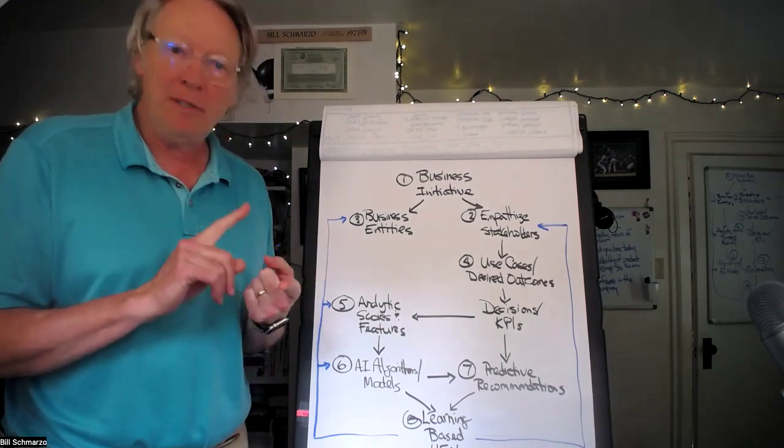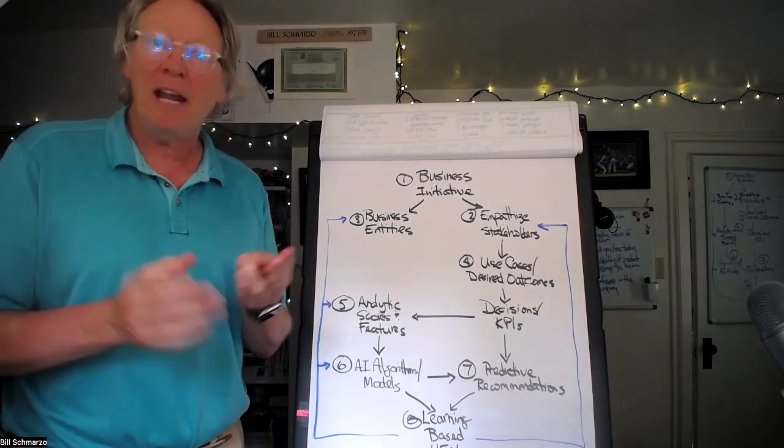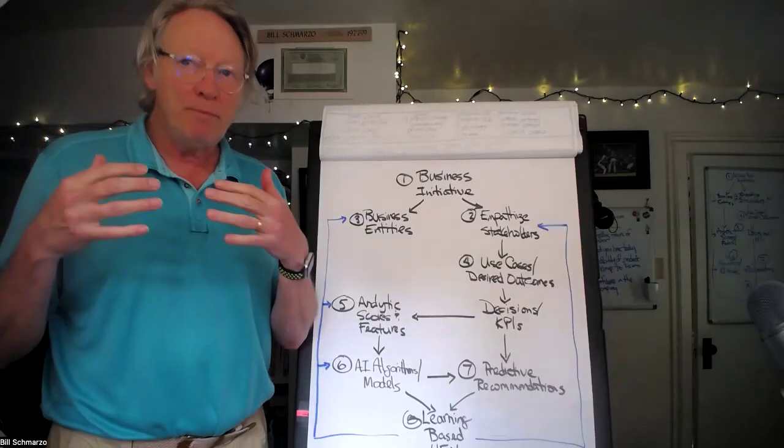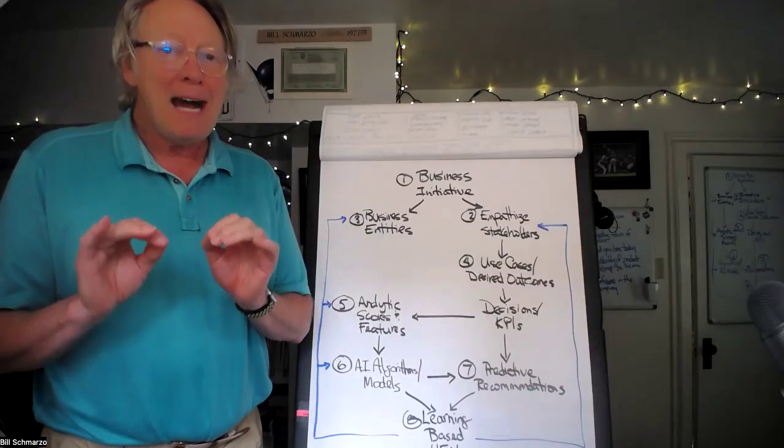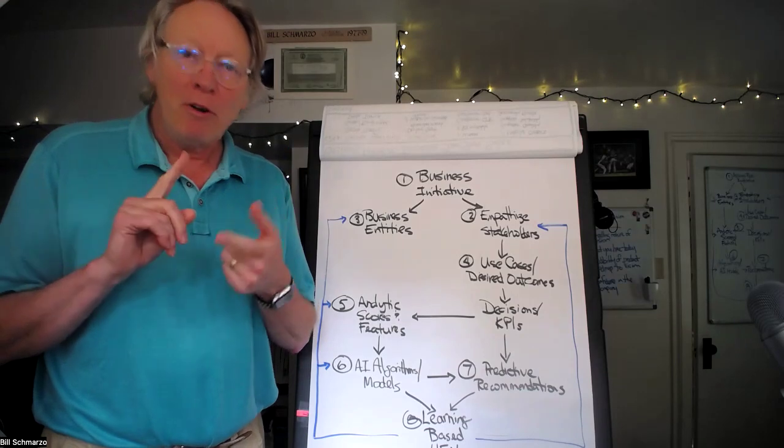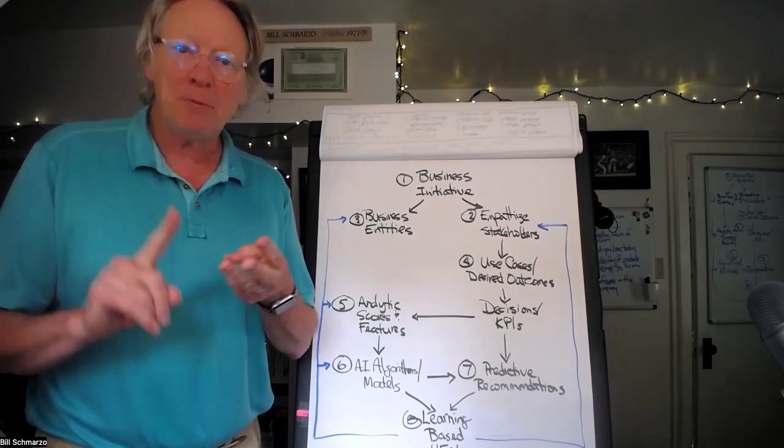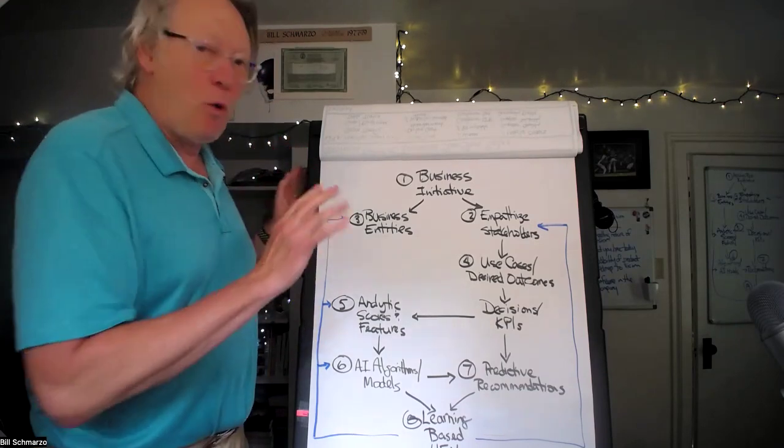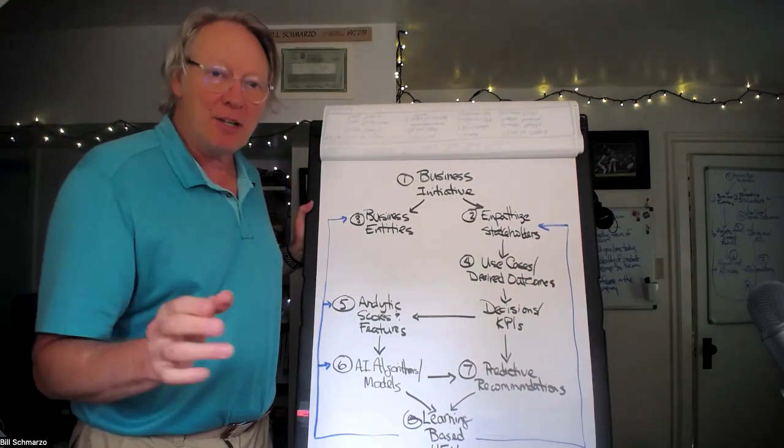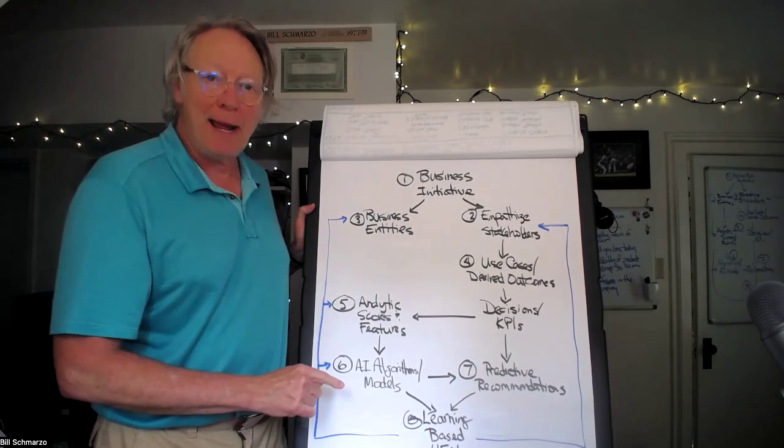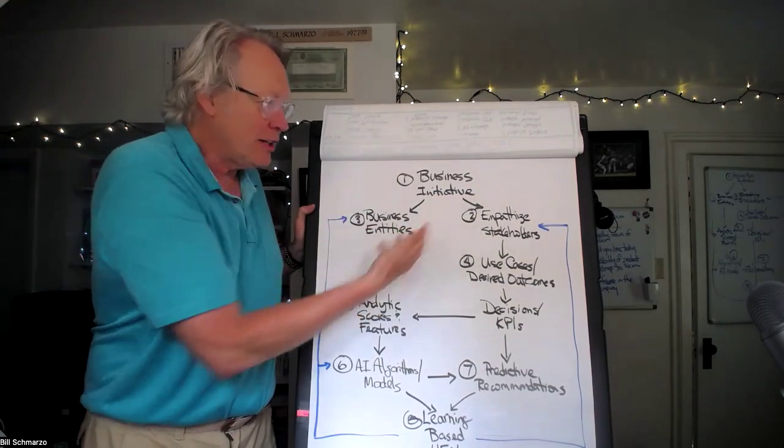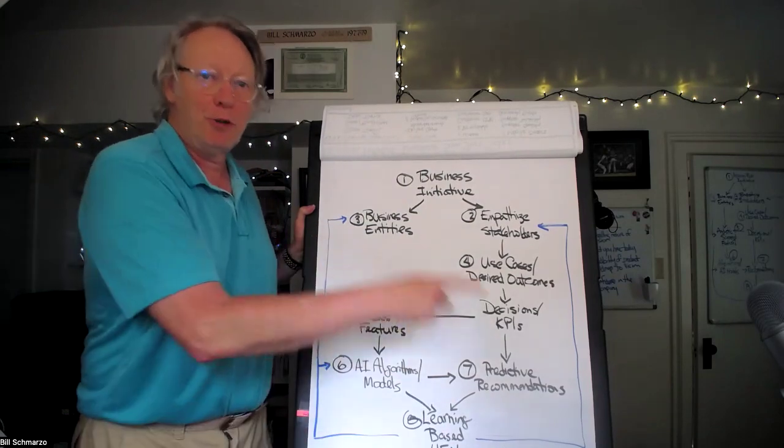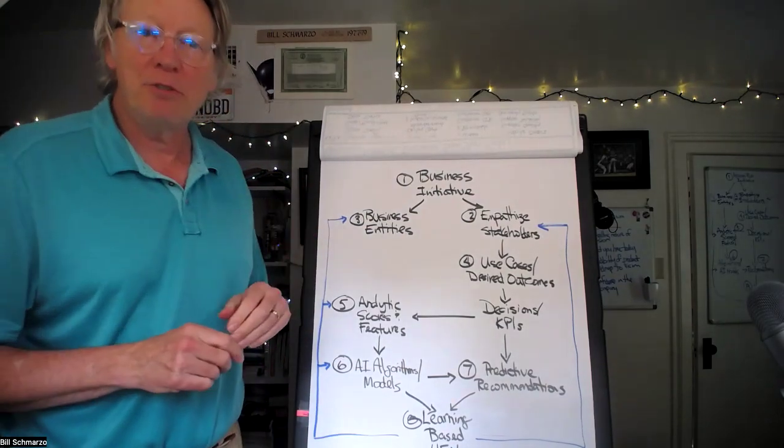The methodology leverages concepts from data science, design thinking, and economics to help us make certain that as an organization, we're using AI and data to deliver more relevant, meaningful, responsible, and ethical outcomes. I'm going to walk you through the eight steps in that methodology and explain how they all interact, how things start and ripple on through, and how we close the loop with a learning-based user experience.